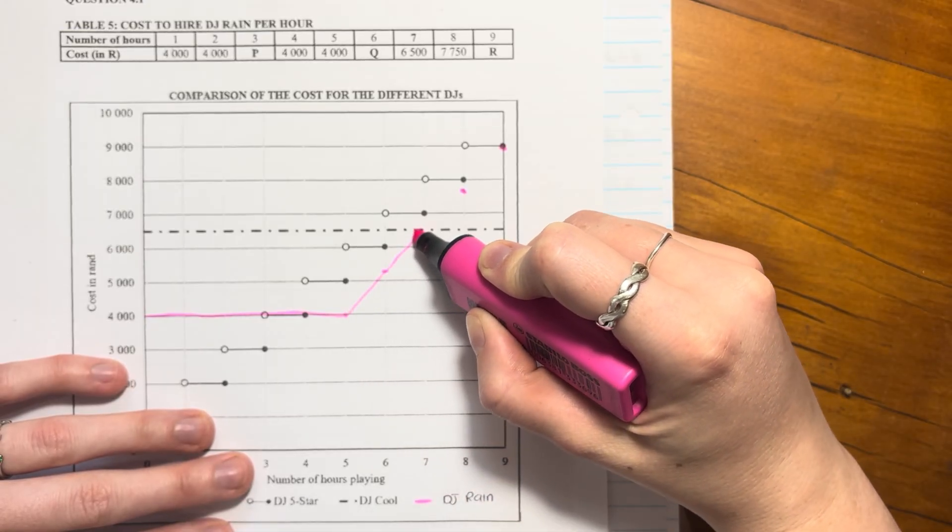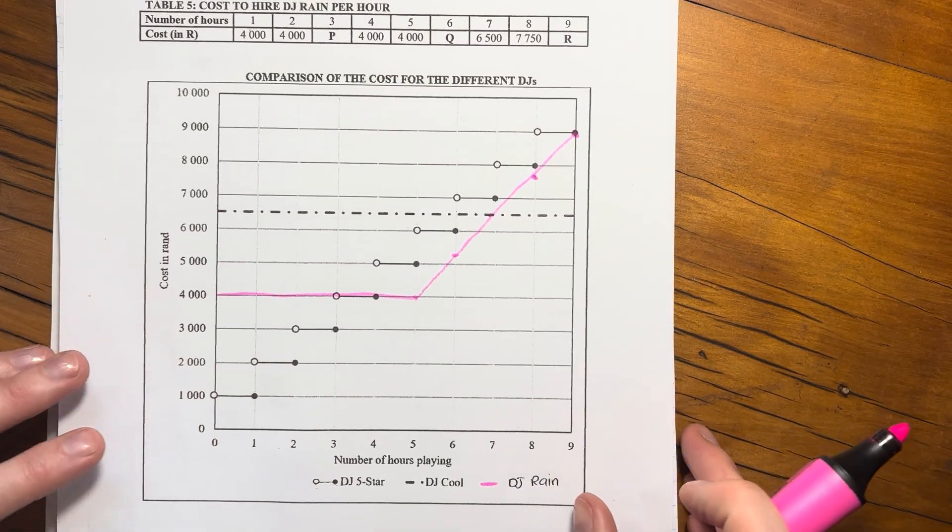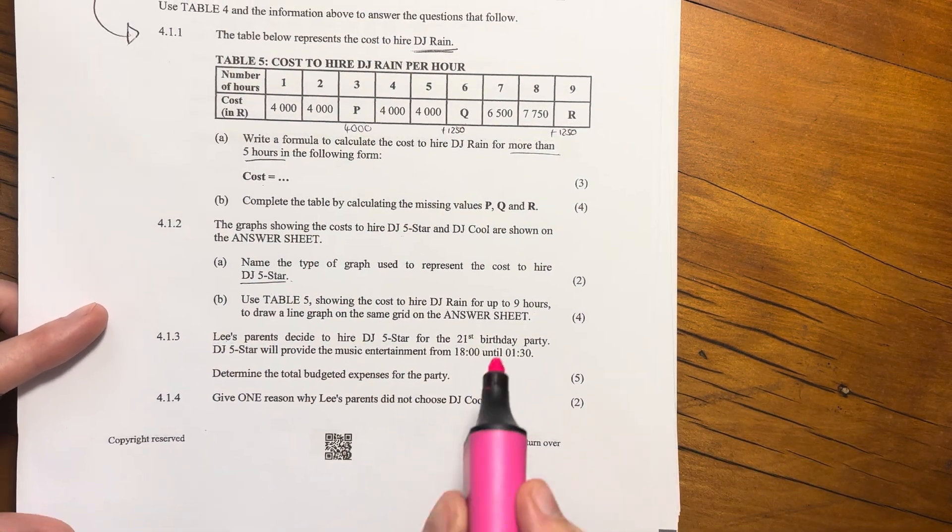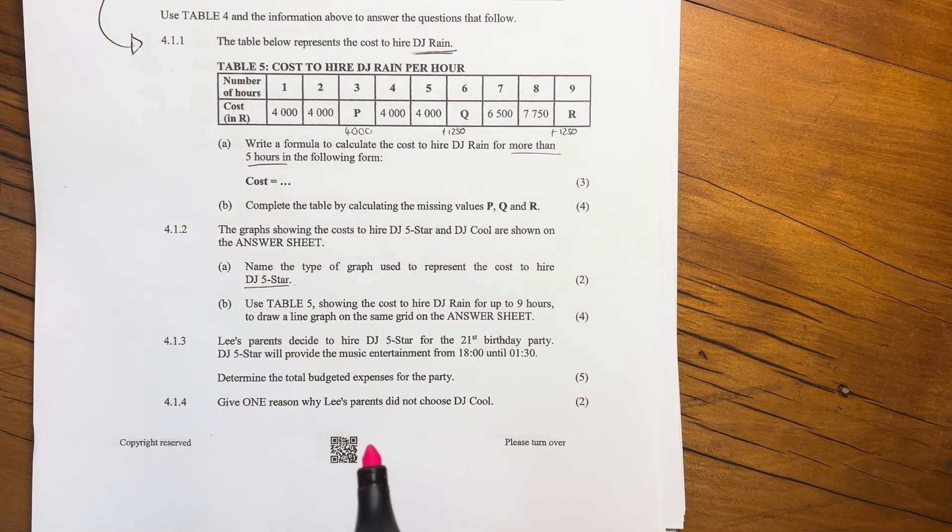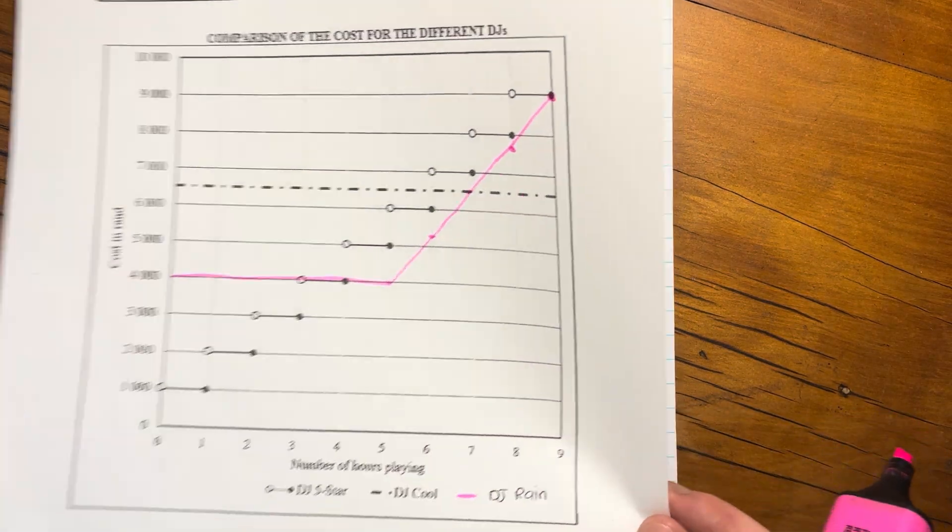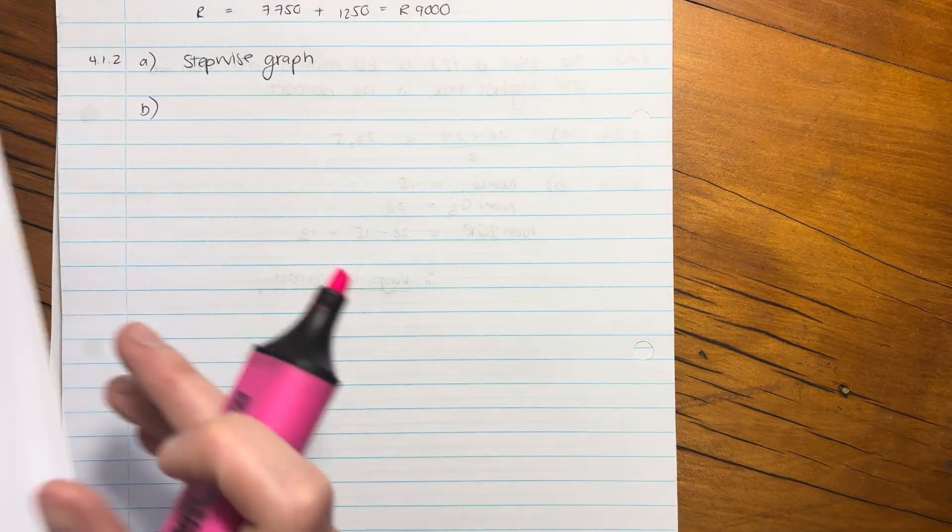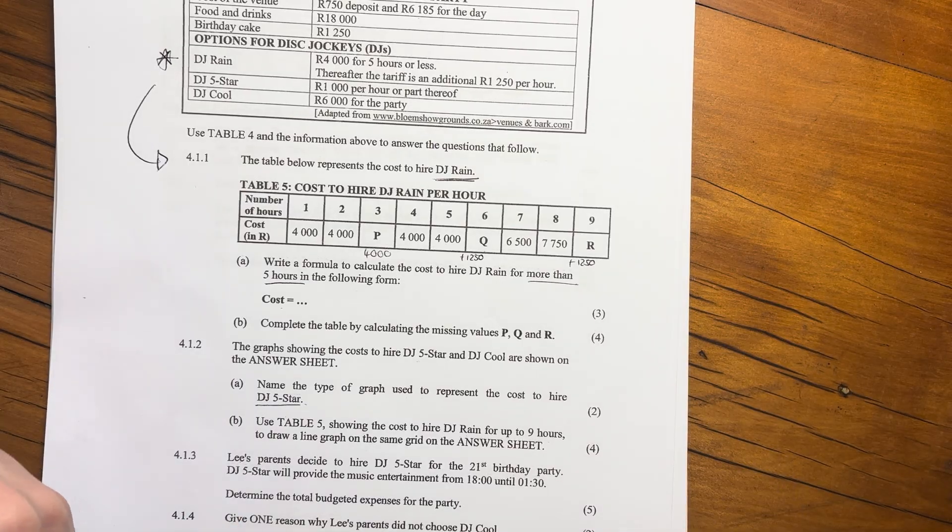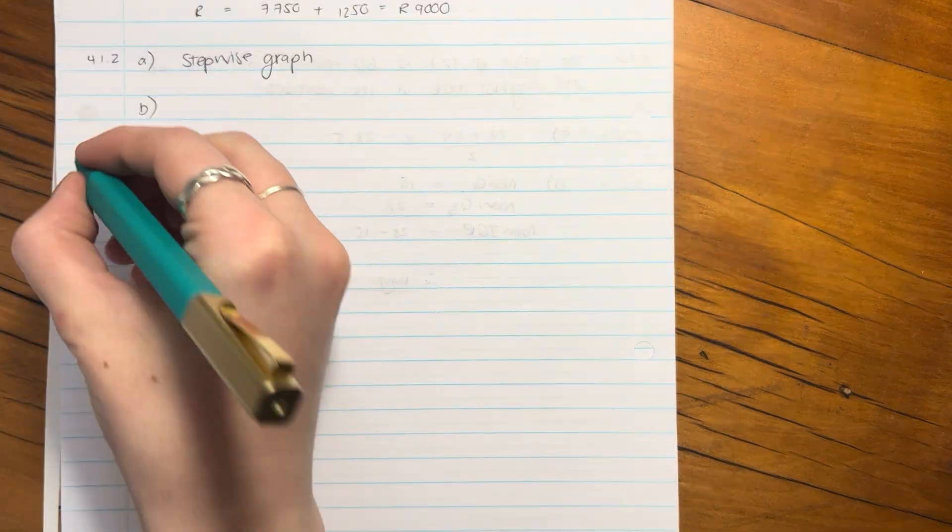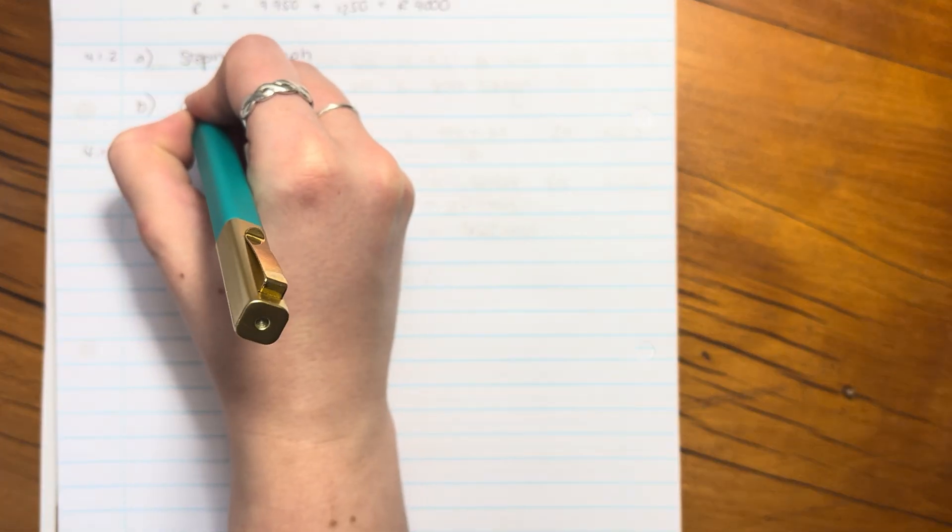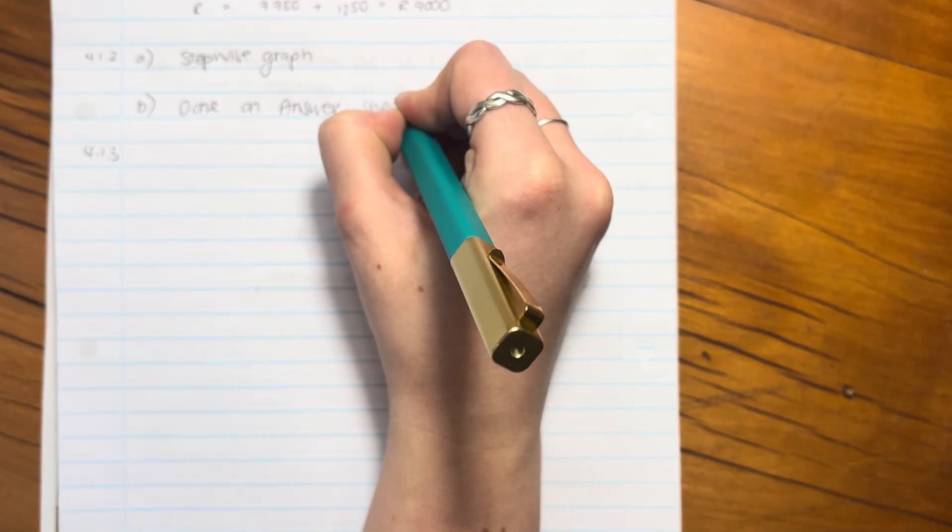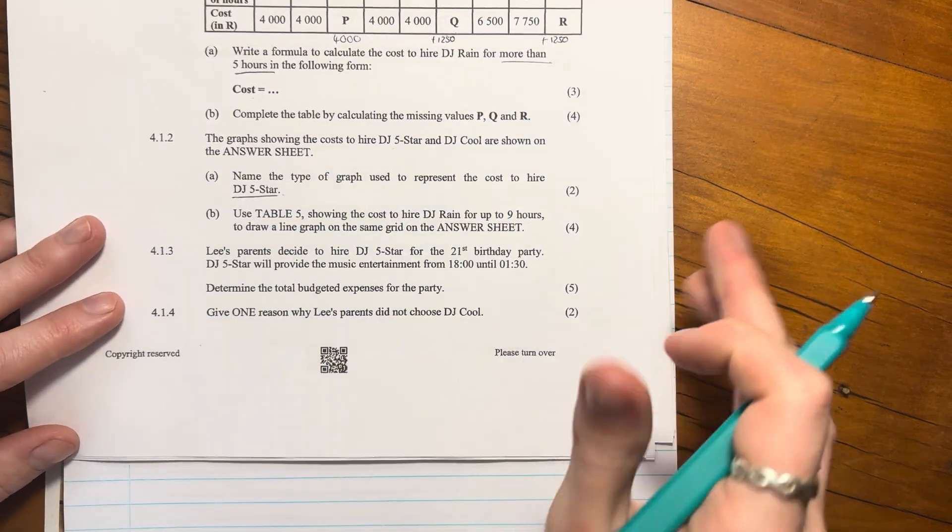Let's see if it asked us for anything else. It says use the table to draw a line graph and we've done that. We've labeled it and we're ready to go. Put that aside. Obviously remember to hand that in when you hand in your paper, you don't want to lose marks for things like that. But let's now move on to 4.1.3. You can just say here done on answer sheet.